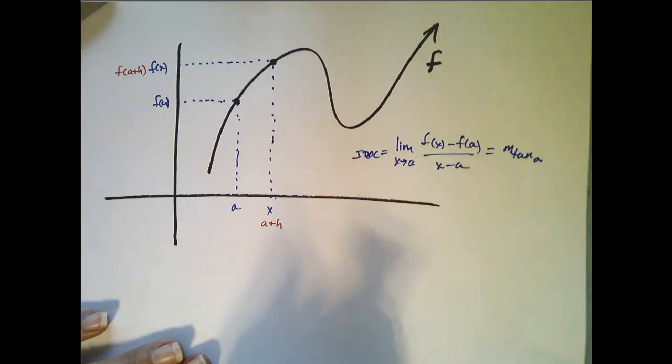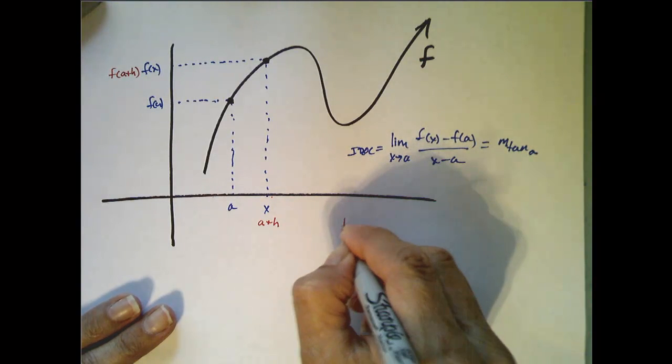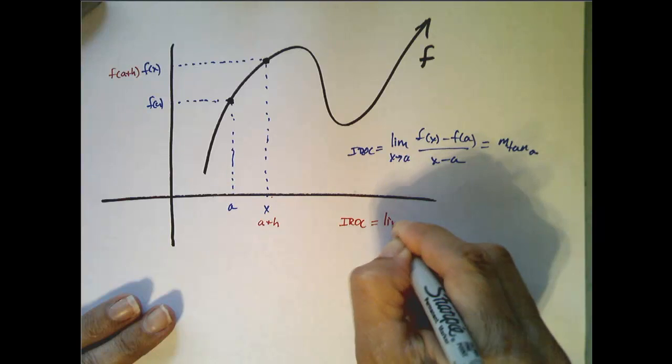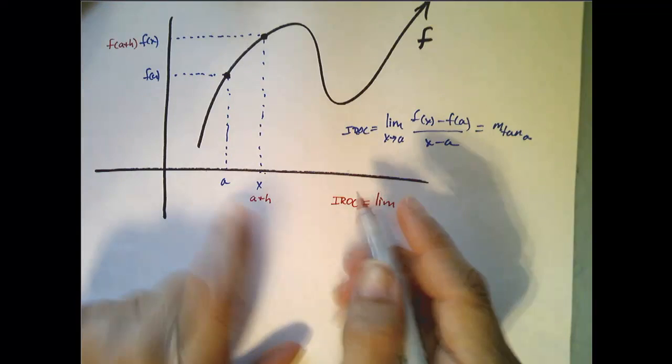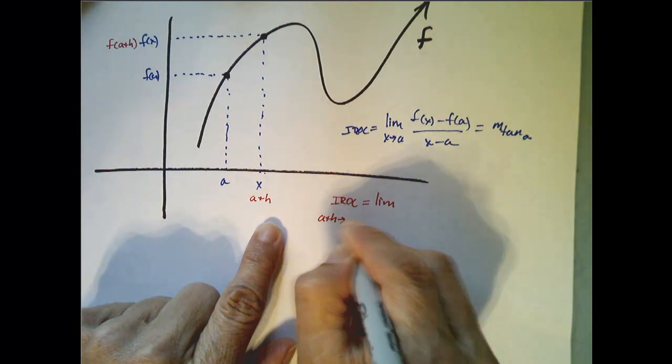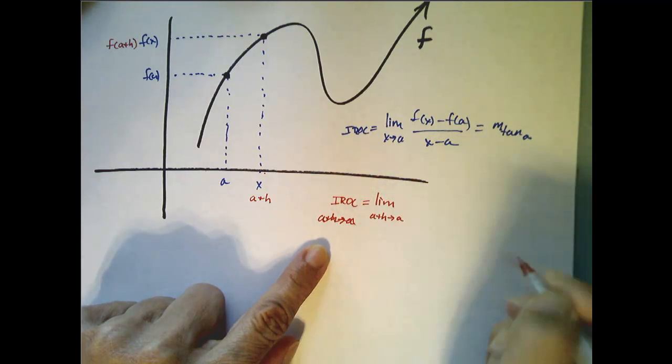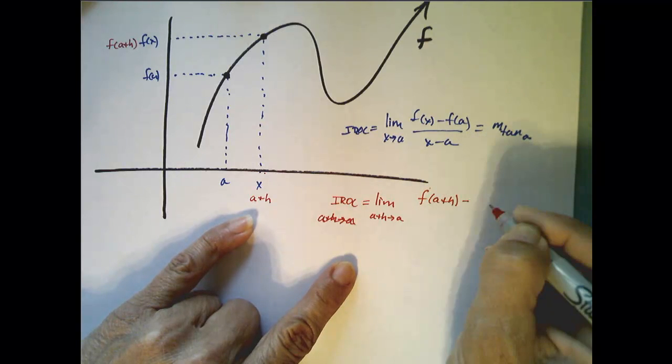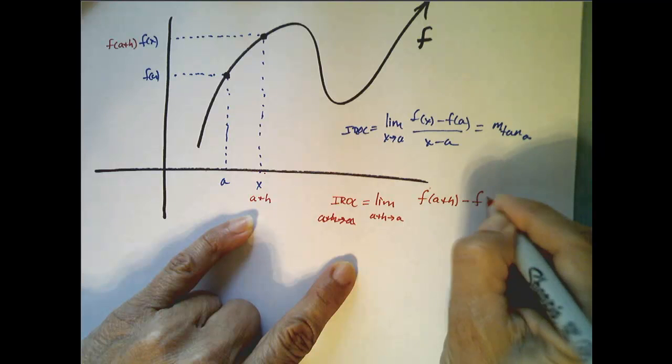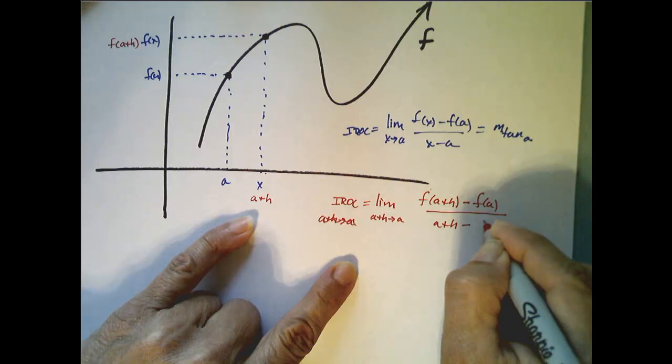So there's no difference here except that I've renamed my second point. Well that would mean that the instantaneous rate of change is equal to the limit as a plus h approaches a of [f(a + h) - f(a)] / [(a + h) - a].